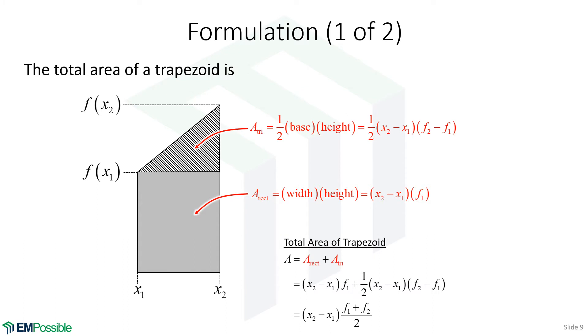The total area is the area of the rectangle plus the area of the triangle. So here's our equation that we got for the rectangle, our equation we got for the triangle. We multiply all this out, we expand, we simplify, and we end up here. That's the area of the trapezoid. So it's our delta x times the average of the f's.